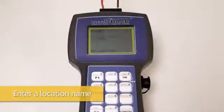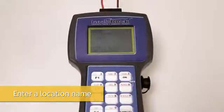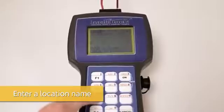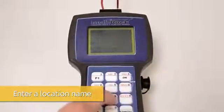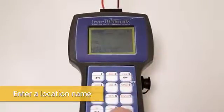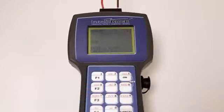Now, give the logger a location name by selecting F1. The location name allows you to easily identify the location of the logger without having to keep track of serial numbers and locations manually. Like the job name, the location name must be 15 characters or less. Press the enter button to accept and save the location name.